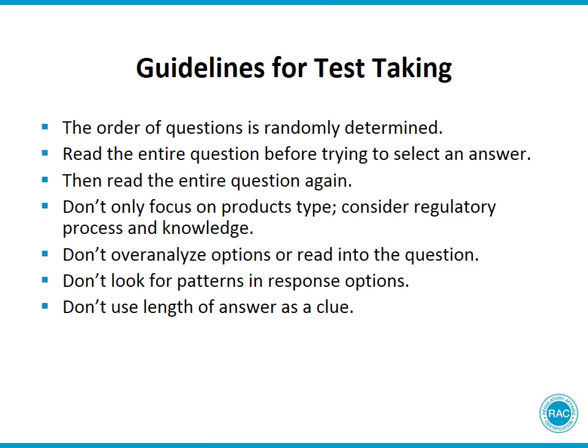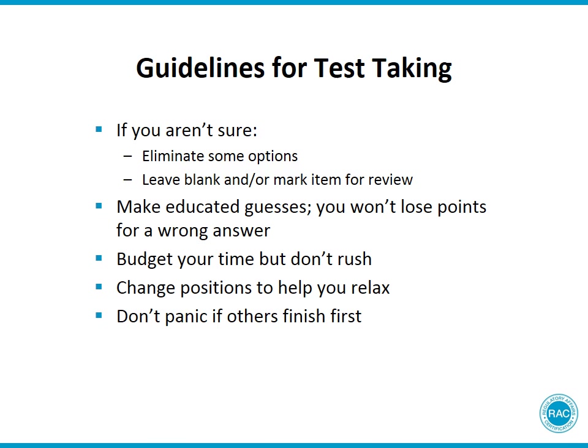Don't look for answer patterns. The testing approach used for the RAC exam ensures that questions and correct responses do not fall into patterns. And contrary to some myths, C will not be the most frequent answer. Don't use the length of a response as a clue — the longer answer is not always the correct one, and the RAC exam committees work hard to balance the length of response options. If you're not sure about an answer, see whether you can eliminate any answers you know to be incorrect. For example, if the question relates to a preclinical step in product development and one possible answer addresses a post-marketing reporting requirement, you can eliminate that option from consideration. If there are two options that appear opposite, usually one of them can be eliminated — use your best reasoning to identify the one that does not fit.